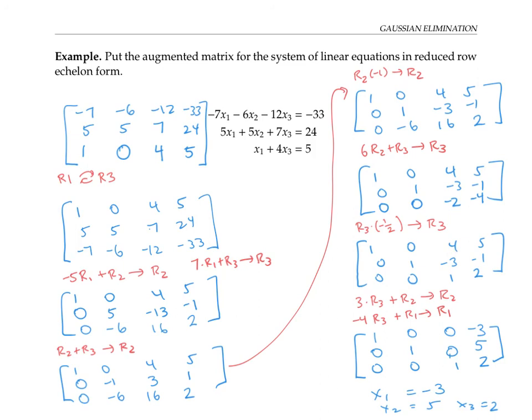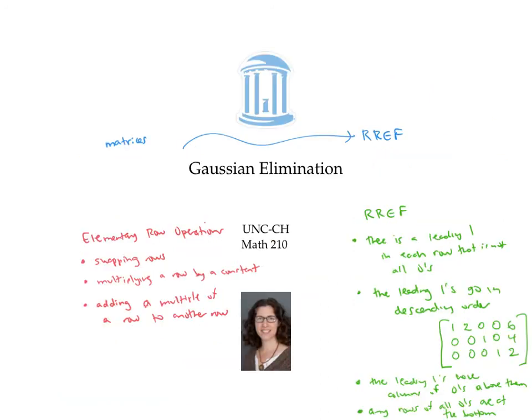This systematic process is called Gaussian elimination. In this video, we used elementary row operations to put a matrix into reduced row echelon form in a systematic process called Gaussian elimination. This process is complex and it takes a while to get adept at it, but once you do, you'll have a powerful tool for solving systems of linear equations efficiently.